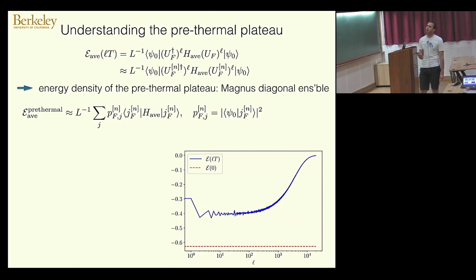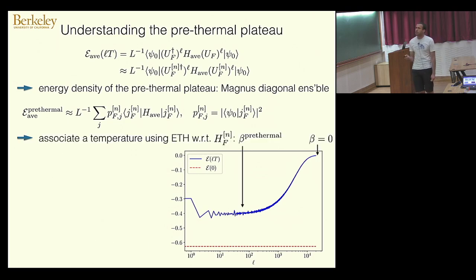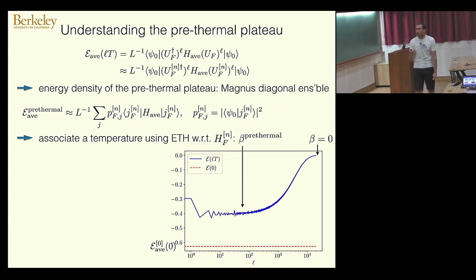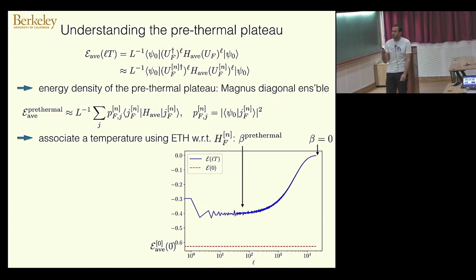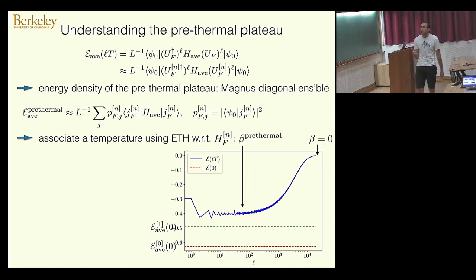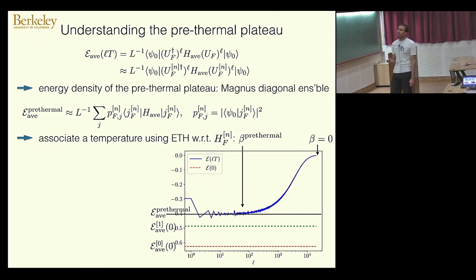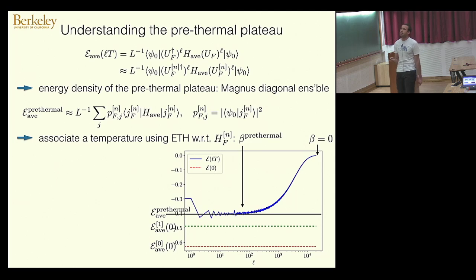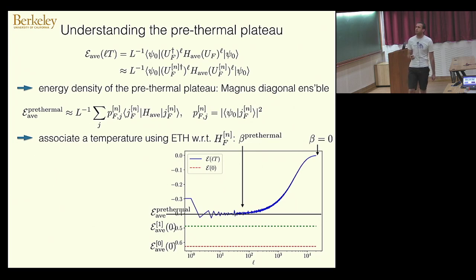This ensemble depends on the order to which you go in the expansion. Starting from zeroth order, you'll be off because it assumes infinite frequency. Including the first couple of orders gets better and better until you hit an optimal order. This optimal order gives you exactly the value of the pre-thermal plateau. Through this energy density and the eigenstate thermalization hypothesis, one can associate a temperature for the pre-thermal regime.